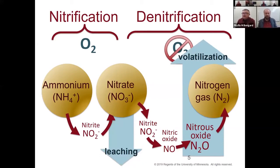The processes of changing ammonium to nitrate, or denitrification going back to N2 gas, are biological. The loss of nitrogen through leaching is not biological — it's physical. Clay particles are negatively charged, nitrate is negatively charged, so if there's free nitrate in the soil and an excess of water moving through it, we'll see it moving down the profile into tile drains or shallow groundwater.